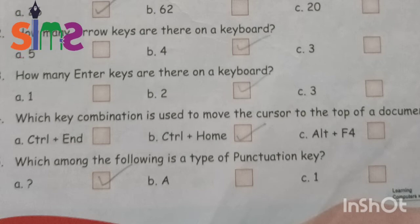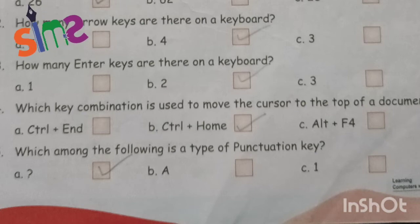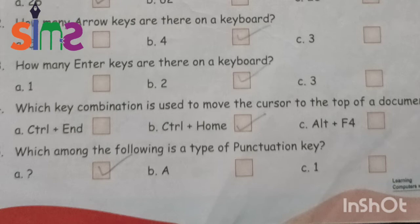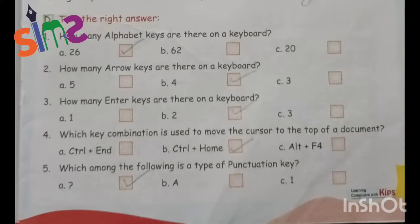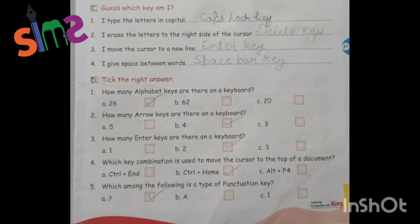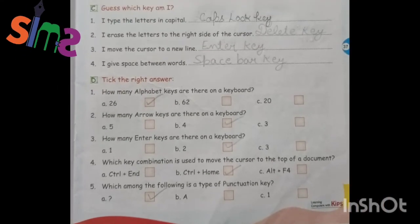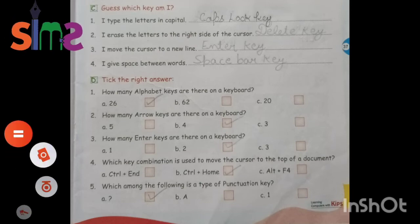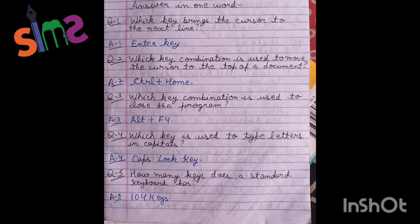B is Control plus Home. And which among the following is a type of punctuation key — the answer is question mark. So we will click on it. Our book exercises are now complete. Now we have one-word answers and question answers. So take out the notebooks and open the question answers section. Students, first of all, I have written answers in one word.